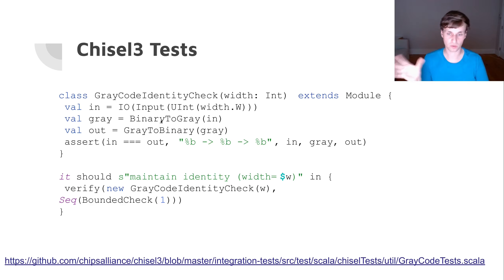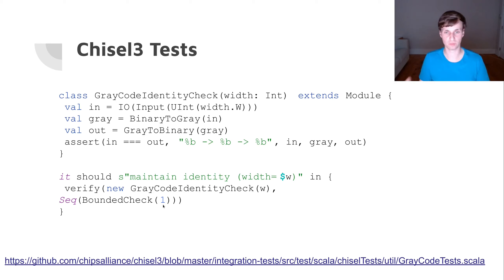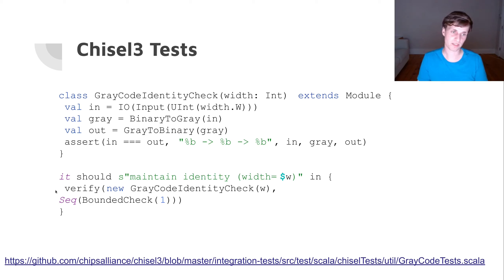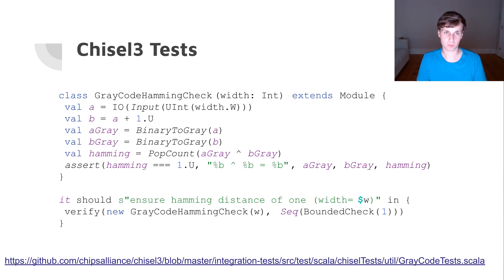Since we don't have any state elements here, a bounded check of one is actually a full proof. And since all of this is written in chiseltest, we can easily iterate over different widths — automatically generating checks for different bit widths — giving us high confidence that the Gray code functionality works.